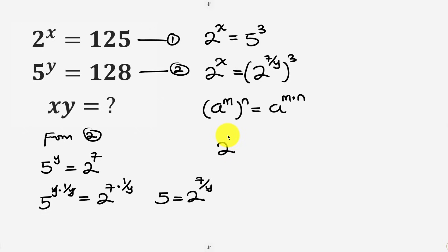So we have 2 to the power of x to be equal to 2 to power, now let's multiply the powers. 7 times 3 is 21 over y. Very good.